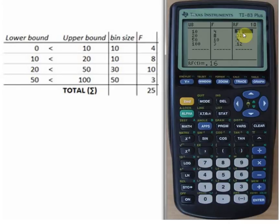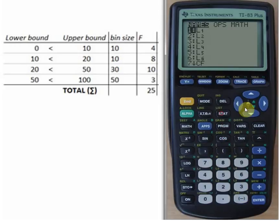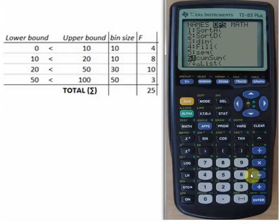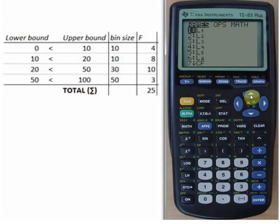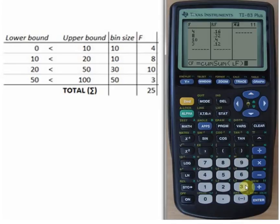Cumulated frequencies. CF, enter, and those are actually an option in the options menu: cumulative sum of the second list, and then the frequencies, enter, close parenthesis. Now you have the cumulated frequencies.